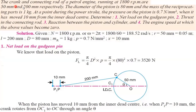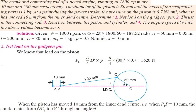In this problem, the crank and connecting rod of the piston has a speed of N equal to 1800 RPM. We can easily calculate the angular speed omega using omega equals 2πN/60. The crank radius r is 50mm and connecting rod length l is 200mm. Convert everything into meters.